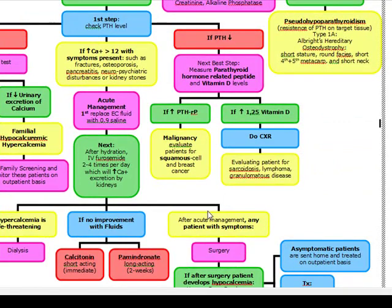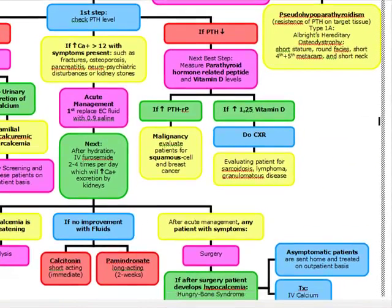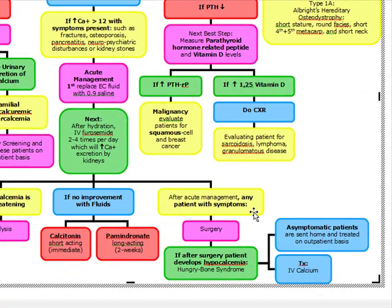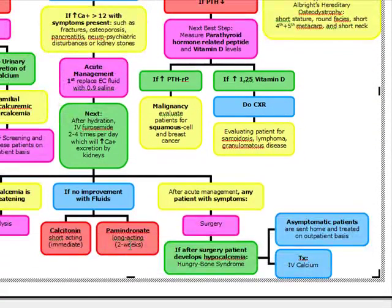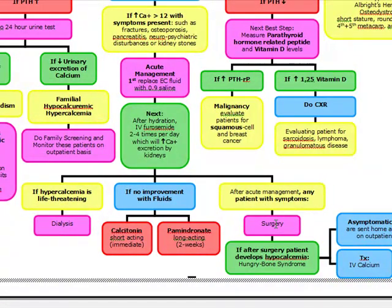After acute management, any patient that has symptoms we're going to prep for surgery. So remember: with hyperparathyroidism, if they have symptoms, after we stabilize the patient we're going to do surgery. Calcium over 12 with symptoms — stabilize the patient first, then surgery. No symptoms, no surgery.